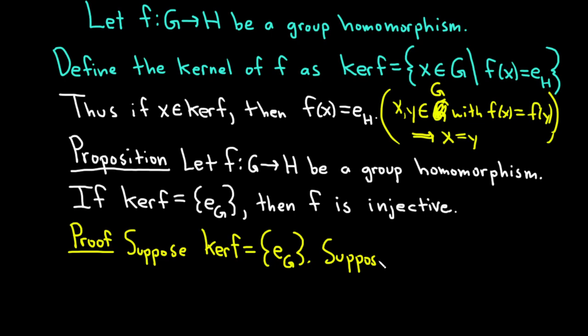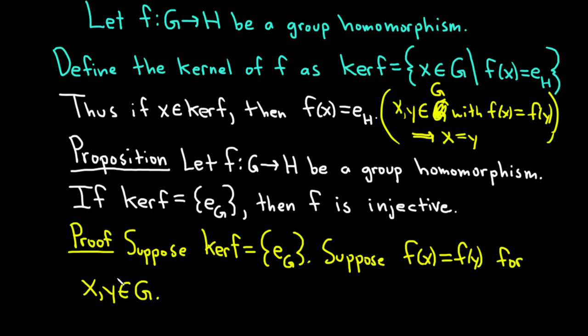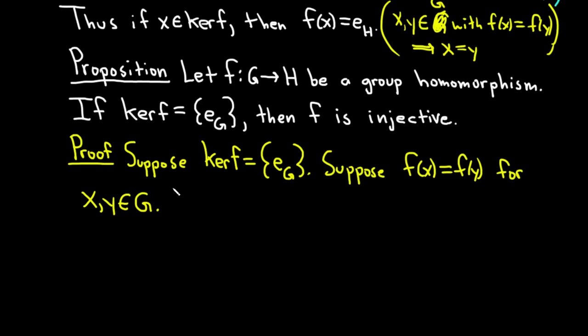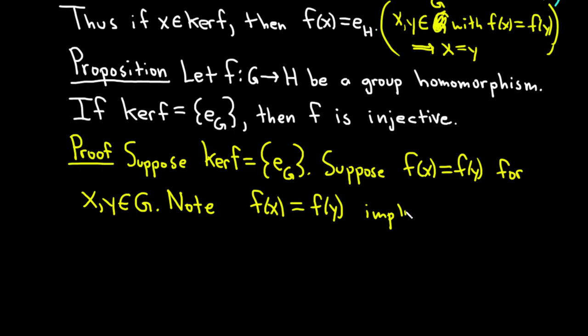So suppose f(x) equals f(y) for x, y in G. Now we have to show that x is equal to y. I'm going to make some leaps here but explain in words. Note: f(x) equals f(y).